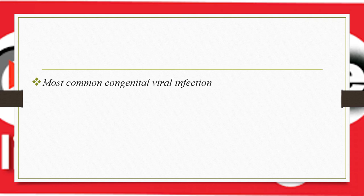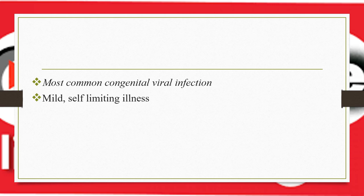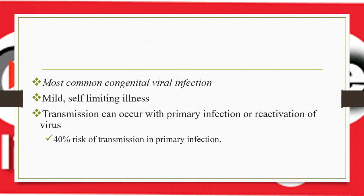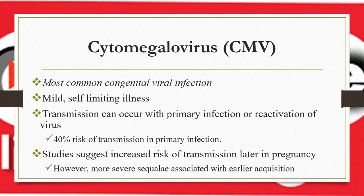CMV infection is the most common congenital viral infection. Congenital cytomegalovirus infection is a mild and self-limiting illness in most cases. Transmission can occur with primary infection or reactivation of the virus. There is a 40 percent risk of transmission with primary infection. Studies suggest increased risk of transmission later in pregnancy, but more severe sequelae are associated with earlier acquisition of the disease.